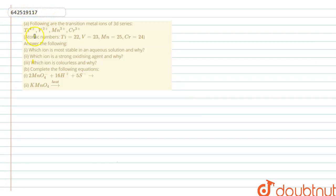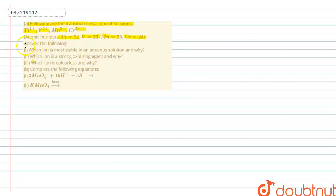Hi guys, today we are going to see a question. Following all the transition metal ions of the 3D series, they have given Ti4+, V2+, Mn3+, Cr3+. The atomic numbers are: Ti is 22, V is 23, Mn is 25, Cr is 24. The questions are: which ion is most stable in aqueous solution and why? Which ion is a strong oxidizing agent and why? And which ion is colorless and why?